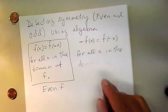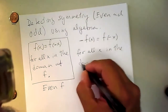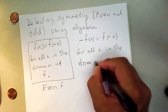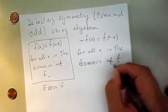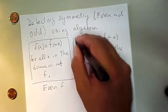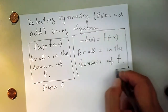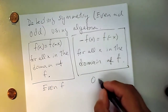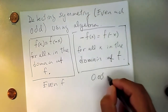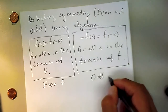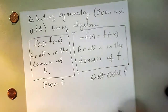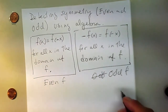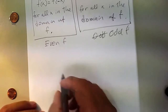For all x in the domain of f. That is what has to happen in order for f to be labeled as odd. So we have even functions and odd functions. Let's look at some examples.